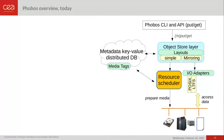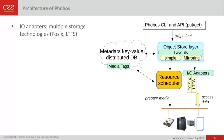Let me give a global overview of the current status of Phobos architecture, step by step. First, we have an IO adapters layer dedicated to fit each storage technology. Currently, POSIX and LTFS are the two existing optimized IO adapters, and I will come back in a few slides to examples of IO adapters we plan to develop.